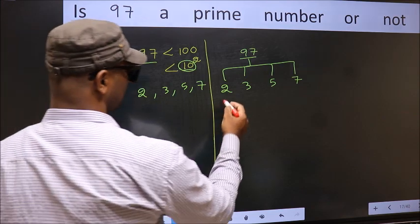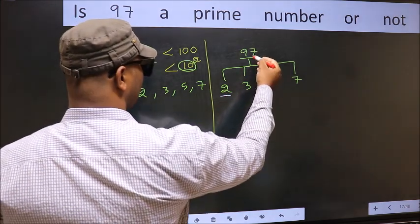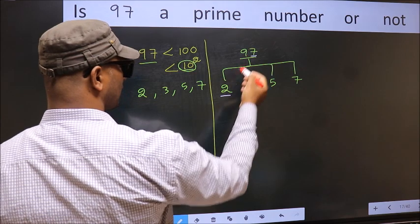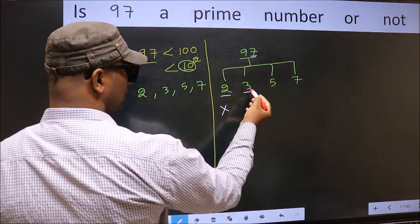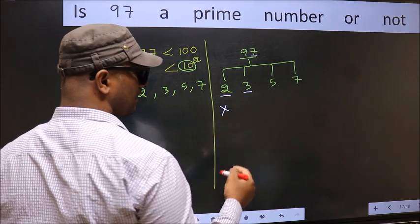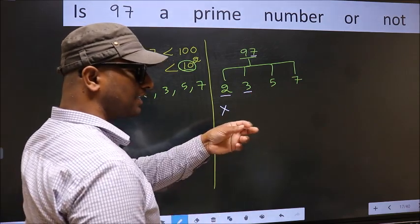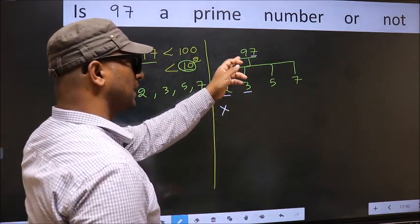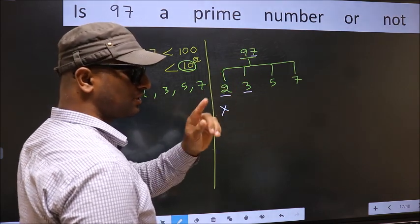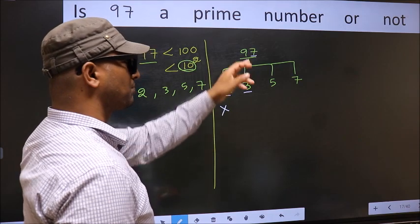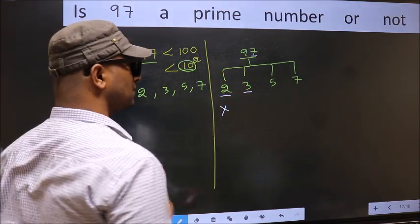Starting with 2. Last digit 7 not even, so this is not divisible by 2. Next, number 3. To check divisibility by 3, for that, add the digits. 9 plus 7, we get 16. And 16 is not divisible by 3. So, this number also not divisible by 3.